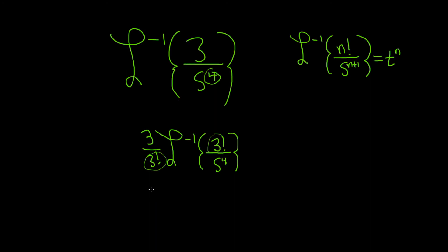Okay, so now we can apply the formula to this piece here. So we have 3 over 3 factorial. 3 factorial is 6. And this piece here, using the formula, you see that n is equal to 3. So we get t cubed.